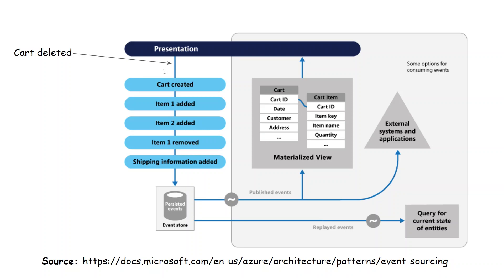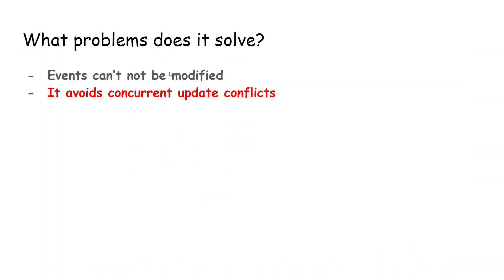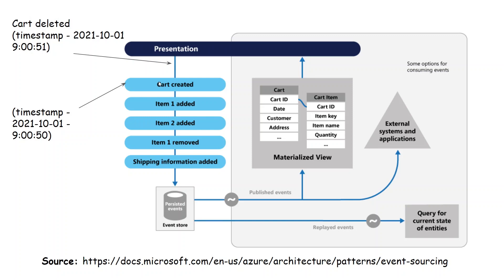Another problem it solves is avoiding concurrent update conflicts. Let's say we have two events trying to modify the state of the event store. What happens is each event can have a timestamp.